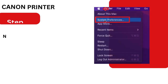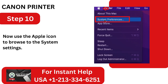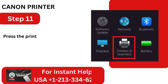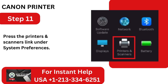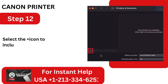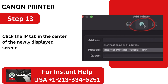Step 10: Now use the Apple icon to browse to the system settings. Step 11: Press the Printers and Scanners link under System Preferences. Step 12: Select the Plus icon to include a printer now.